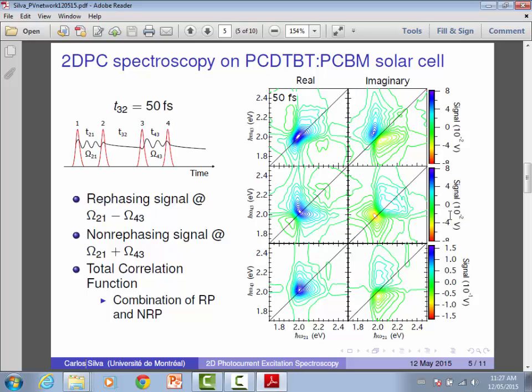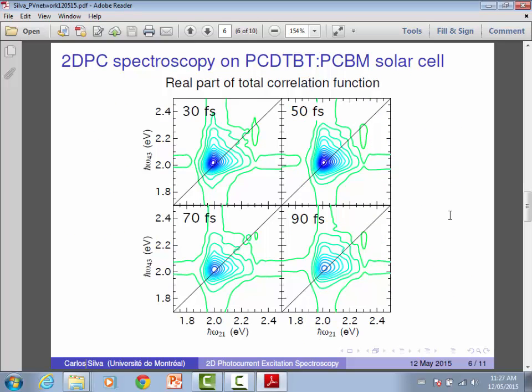I don't have too much time to get into the details, but what we're going to do is excite first with one pair of pulses, and we're going to delay it by a delay T2-1. We're going to modulate the relative phase at a frequency omega-2-1. Then we're going to have a second pair that is delayed one pulse with respect to the other by T4-3, and the relative phase of this is oscillating at omega-4-3. We're going to delay one pair with respect to the other.